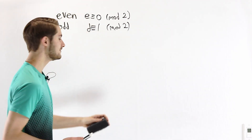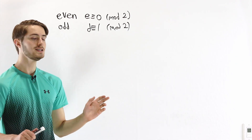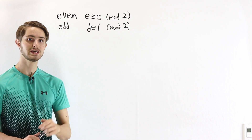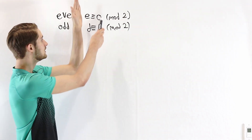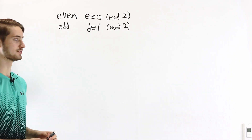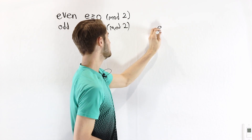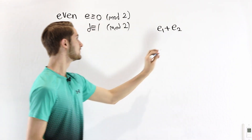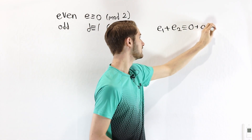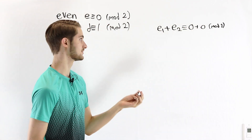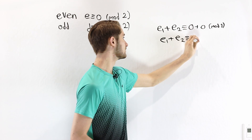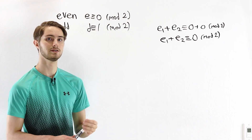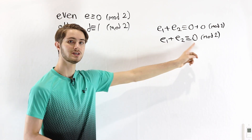From here, we can start deriving some properties of even and odd numbers, because we know that any even number is congruent to 0 mod 2, and any odd number is congruent to 1 mod 2. First, let's look at properties of sums. If we have two even numbers E1 and E2, their sum is congruent to 0 plus 0 mod 2, which is 0. So E1 plus E2 is congruent to 0 mod 2, and therefore the sum of two even numbers is always even.